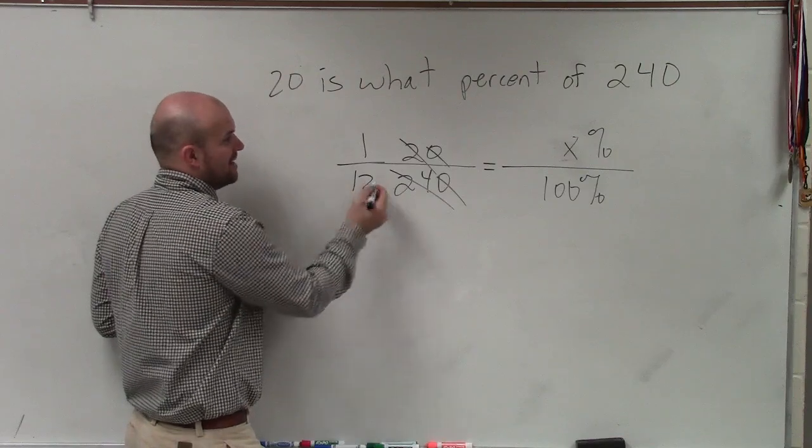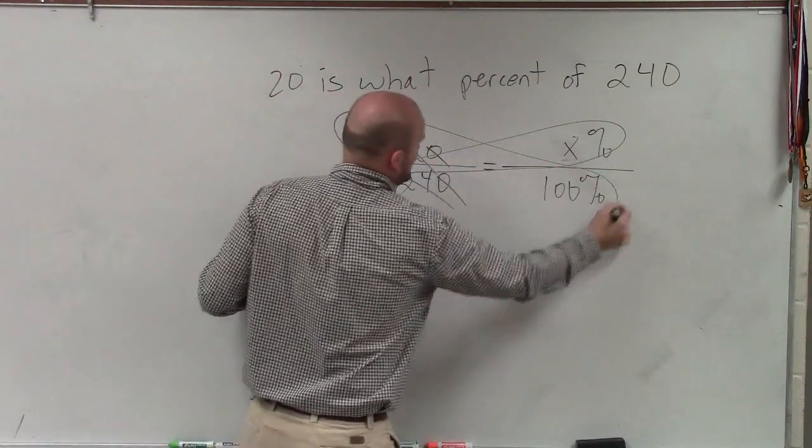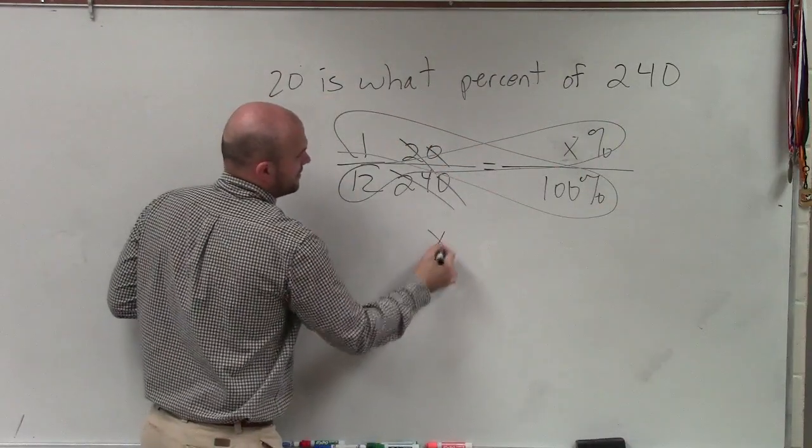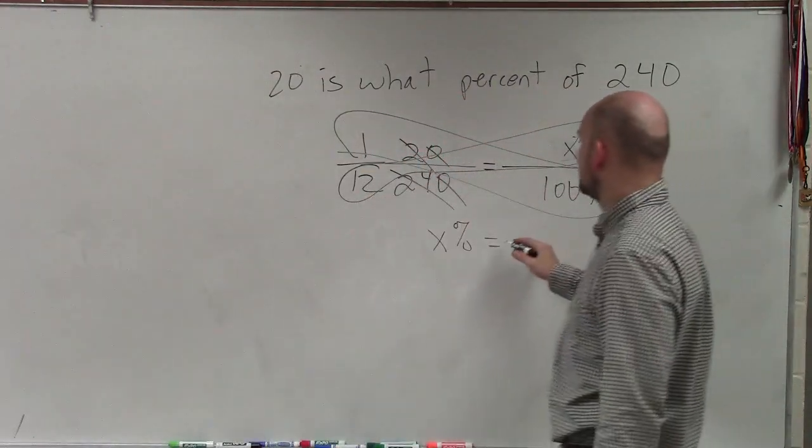Right? So that's not too bad. That's actually going to make this problem very simple. So now, when I plan my cross product, I have x percent is equal to 1 times 100.